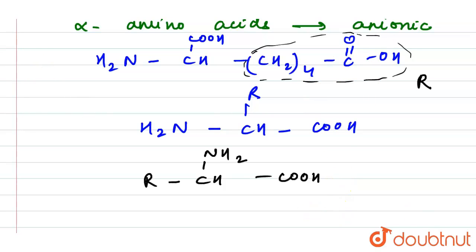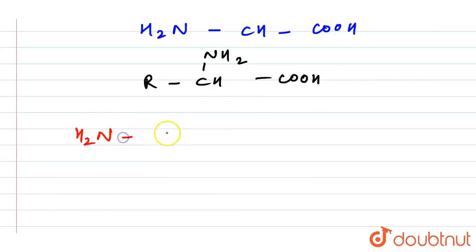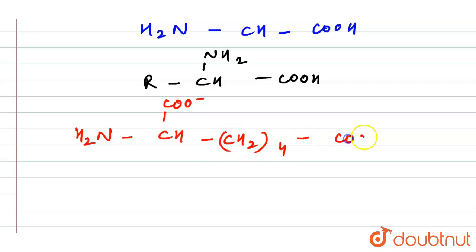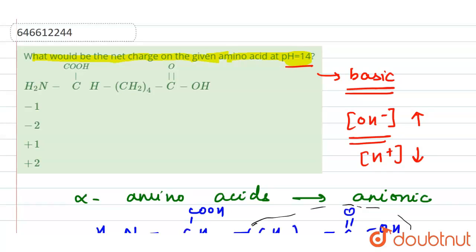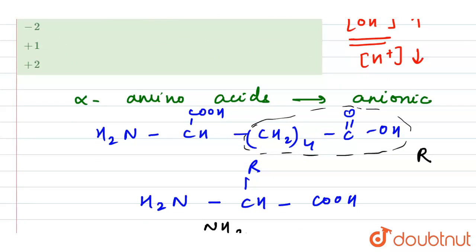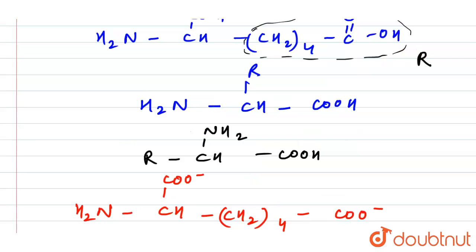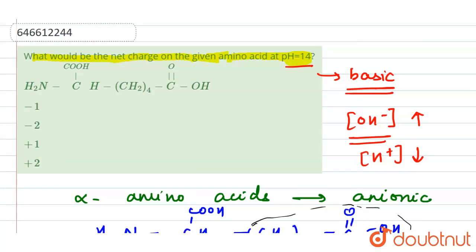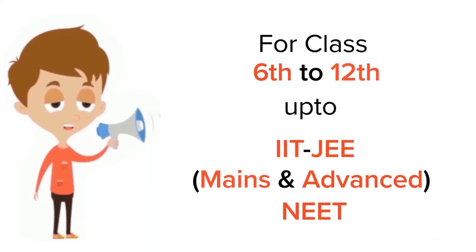In the basic solution at pH equal to 14, the amino acid exists in the anionic form: H₂N-CH(COO⁻)-(CH₂)₄-COO⁻. Both carboxylic acid groups lose their protons and become COO⁻. Therefore, the net charge is -1 + (-1) = -2. So the net charge on this amino acid at pH 14 is minus 2.